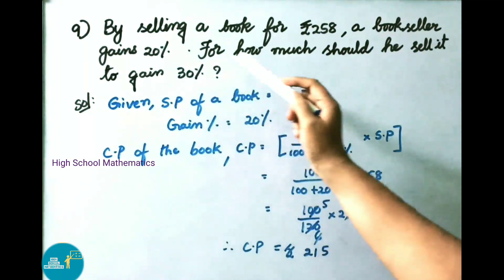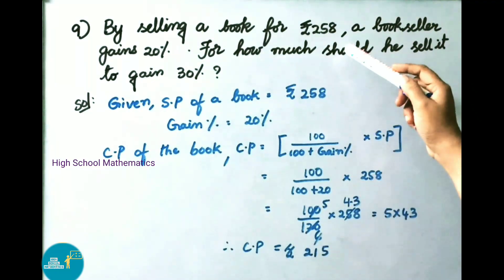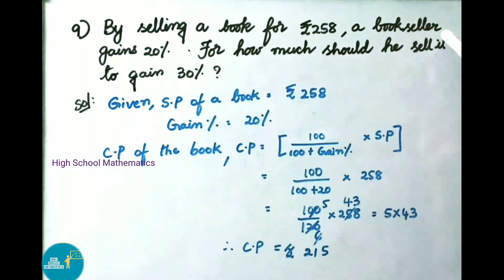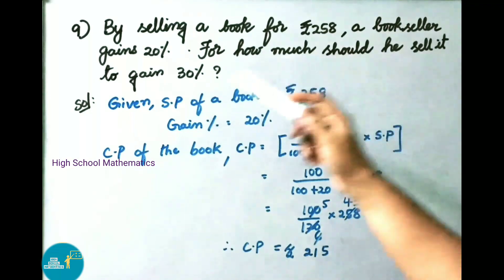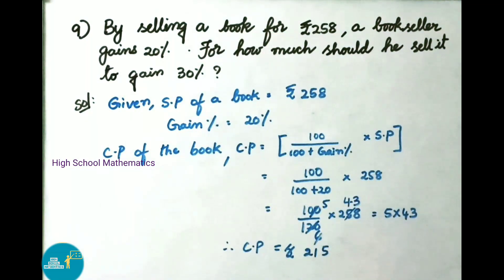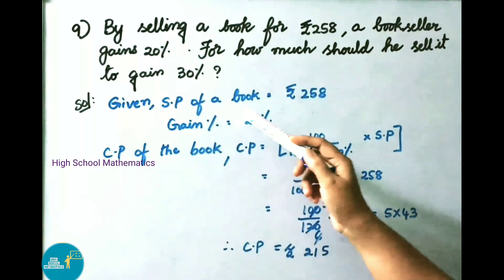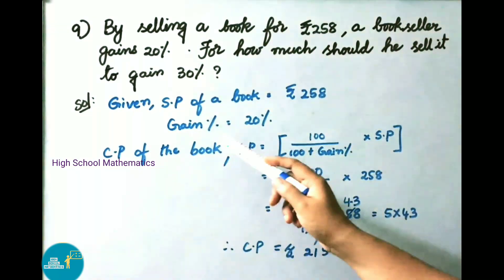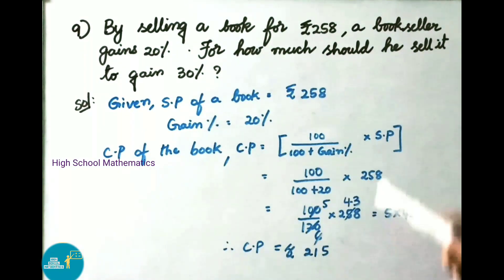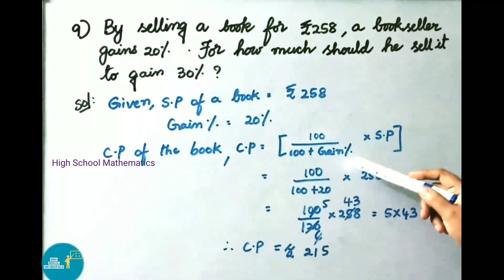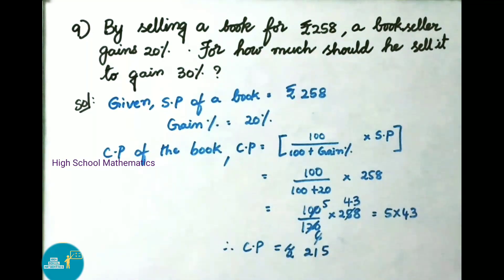Question number 9: By selling a book for 258 rupees, a bookseller gains 20 percent. For how much should he sell it to gain 30 percent? Solution: given selling price of book is 258 rupees and gain percent is 20 percent. Let us find cost price using the formula: cost price equals 100 by (100 plus gain percent) into selling price.